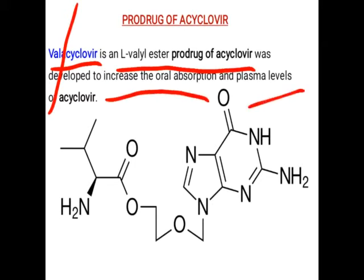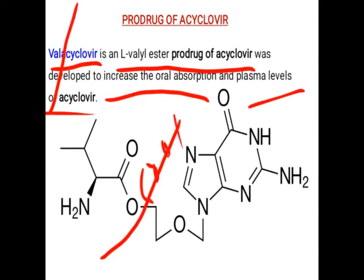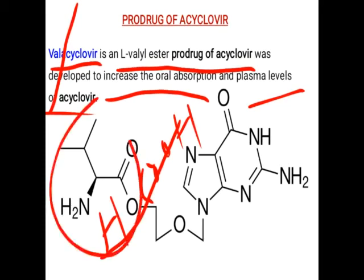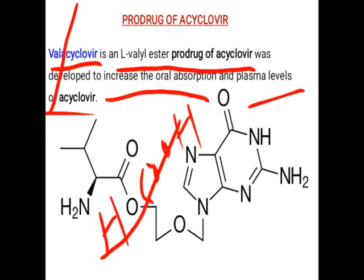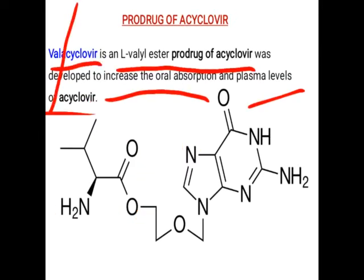Valacyclovir is the L-valine ester product of acyclovir, and it was developed to increase the oral absorption and plasma level of acyclovir. The valine part has the structure where COOH and H are present — that is the structure of valine. The ester formation produces this prodrug of acyclovir.